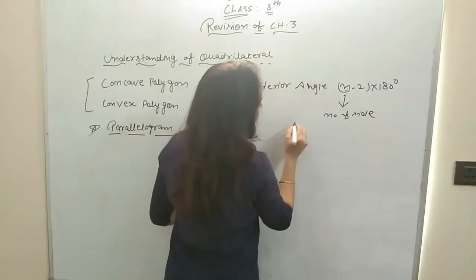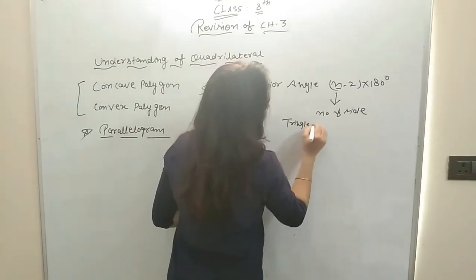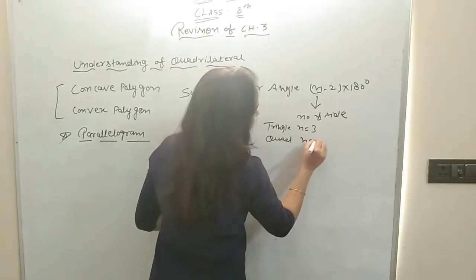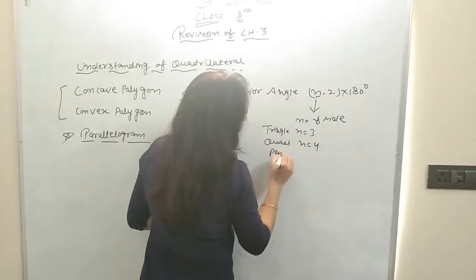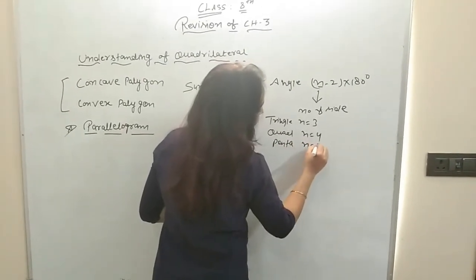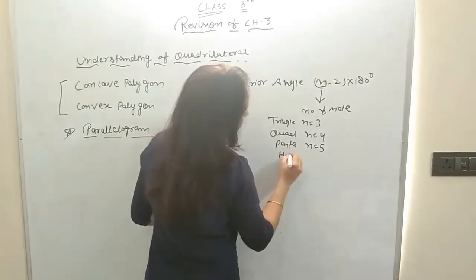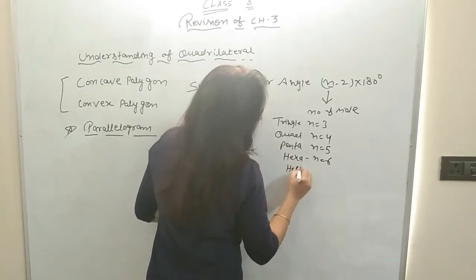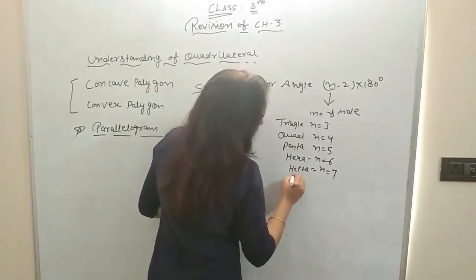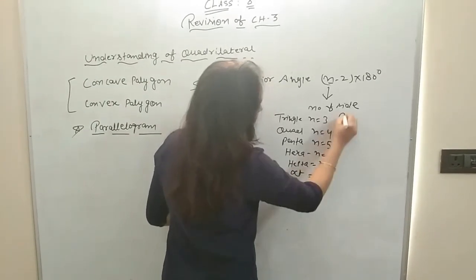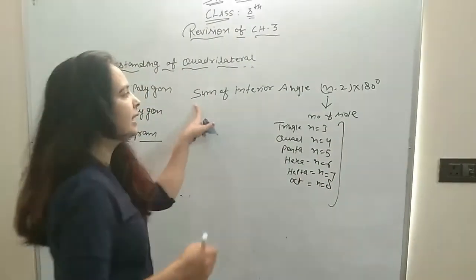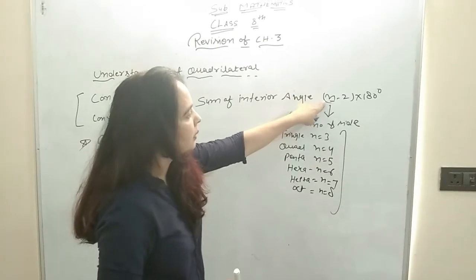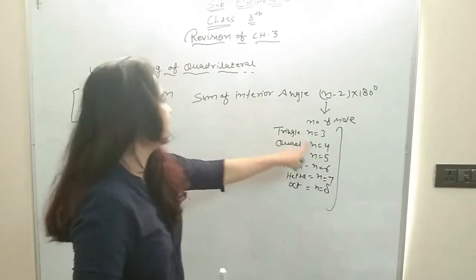It means that if we take a triangle, n equals 3. If you take a quadrilateral, the value of n is 4. If you take a pentagon, n is 5. If you take a hexagon, n is 6, and for octagon n is 8. So to find the sum of interior angles for triangle, quadrilateral, pentagon, or hexagon, you simply put the value of n into the formula (n−2)×180° and find the answer.